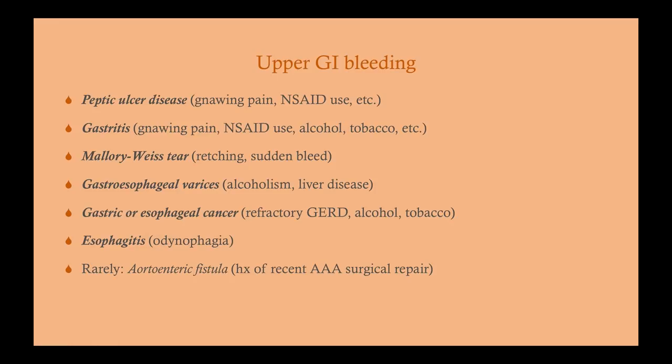A Mallory-Weiss tear is dry heaving suddenly followed by hematemesis. Typically these are patients who went on a drinking binge, are retching repeatedly with nothing left in their stomach, and then suddenly the esophagus tears slightly — blood enters the stomach and they start vomiting bright red blood. Consider this in any patient with dry heaves who suddenly vomits bright red blood. These are often otherwise-healthy patients who went on a drinking binge, but even conditions causing prolonged vomiting — like vertigo — could lead to a Mallory-Weiss tear.